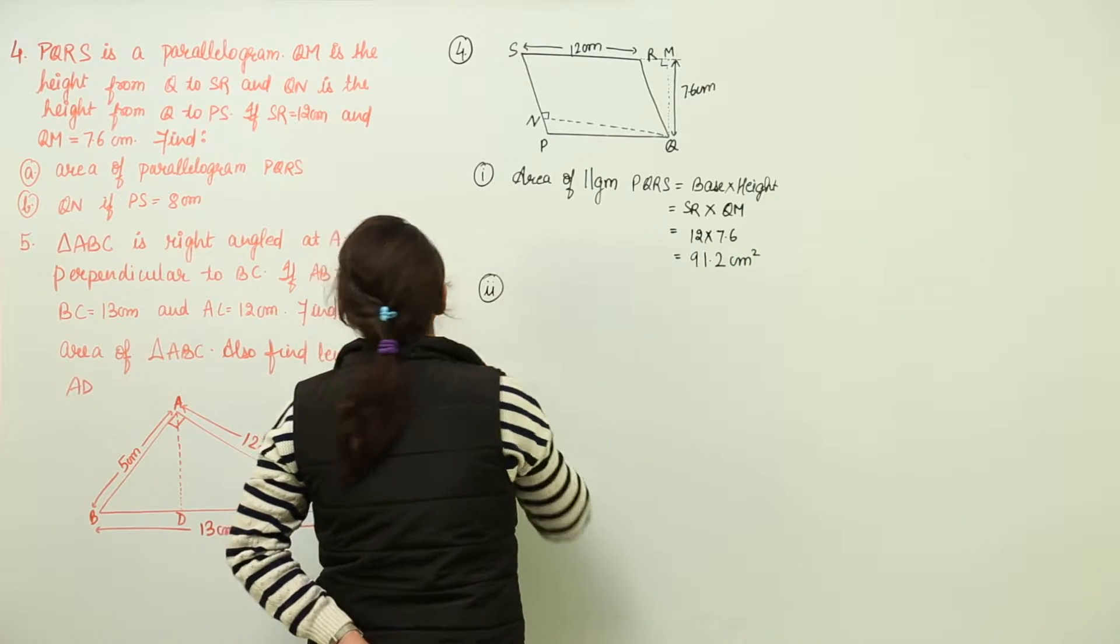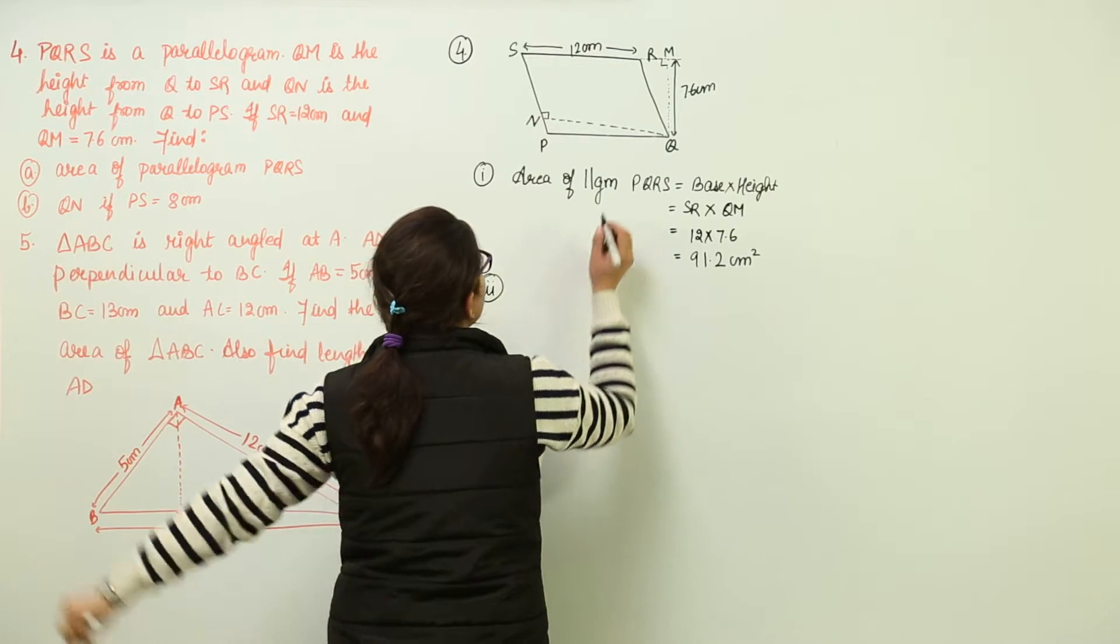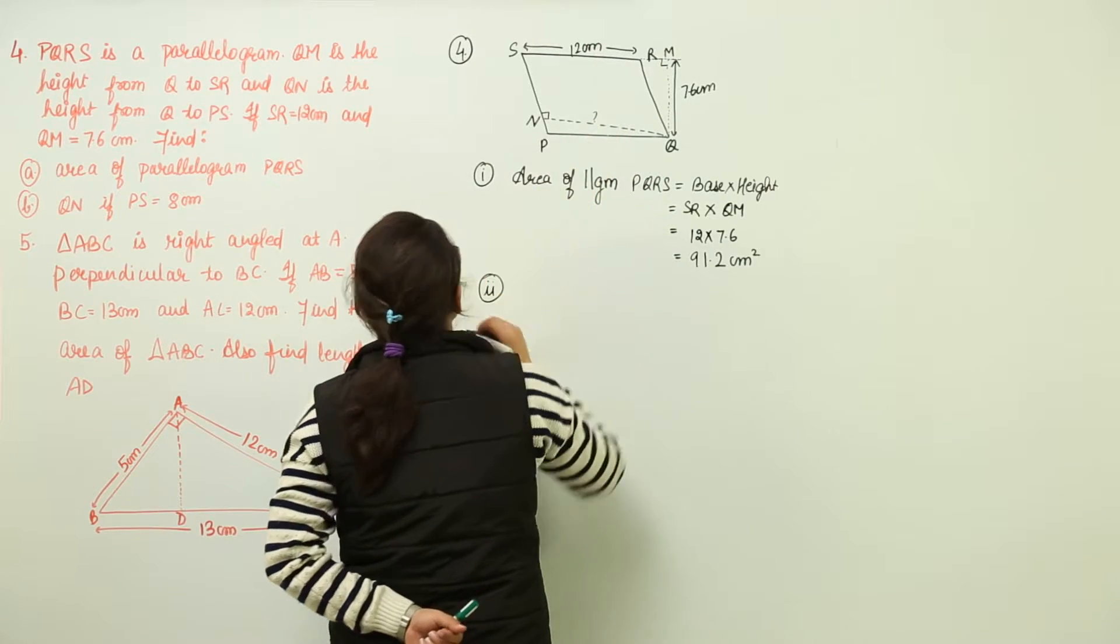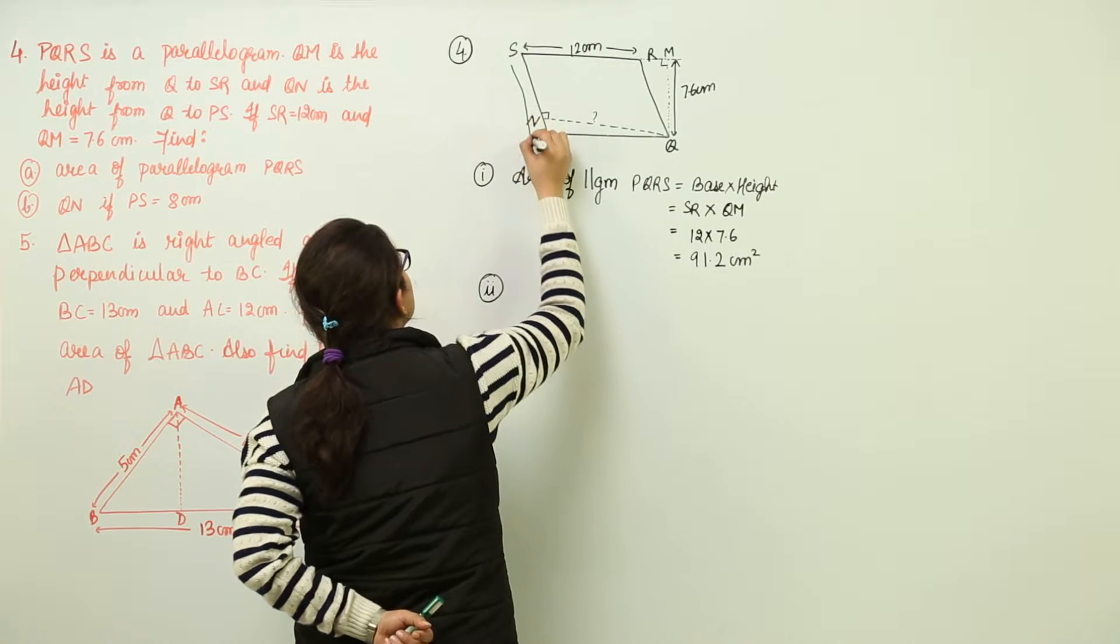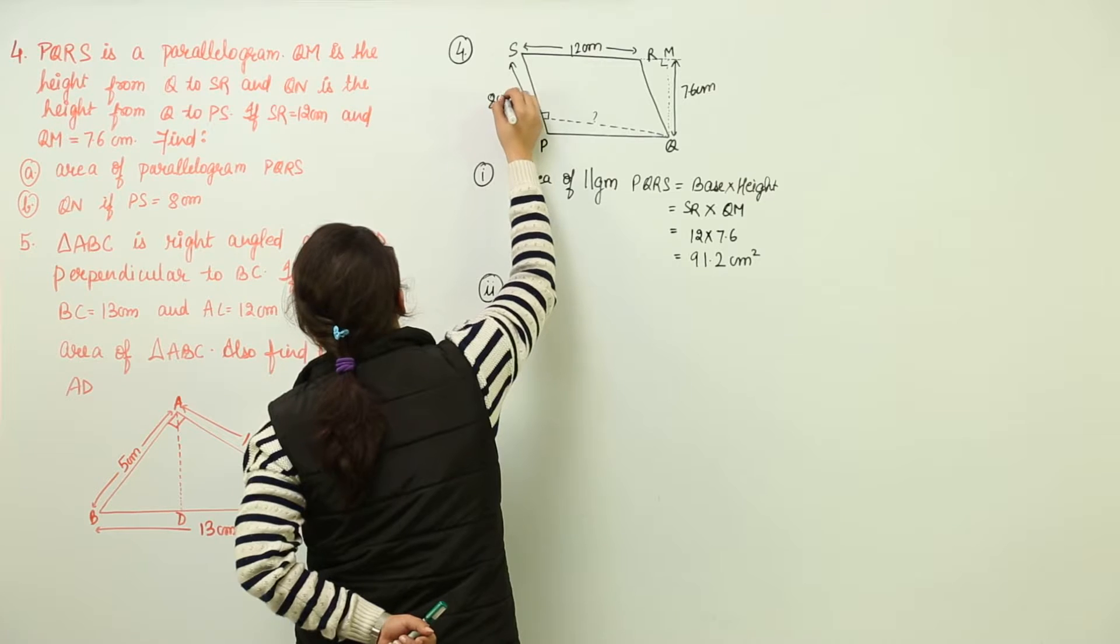Now the next step is finding the next, that is QN. We have to find out the measurement of QN. If PS is given to us, now the measurement of PS has been given to us, which is 8 centimeters.